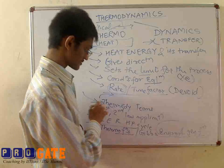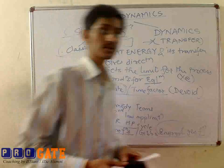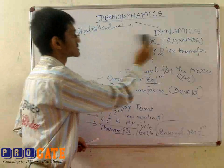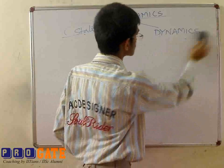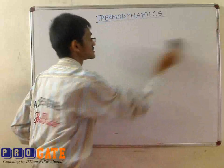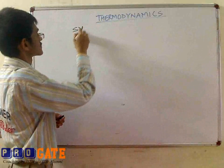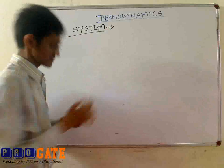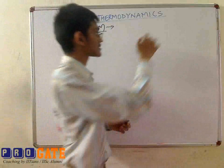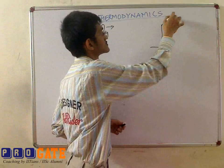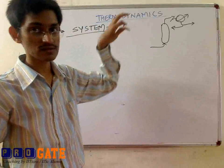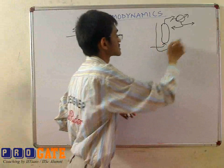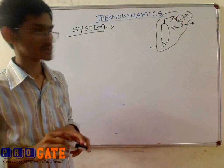So let's first study thermodynamic terms. As you all know, thermodynamics deals with system and surrounding. What is a system? A system is any part of the universe which is under study. For example, if we have a distillation column with streams coming in and going out, the distillation column would be the system, and the surroundings would be everything outside the control boundary of the distillation column.